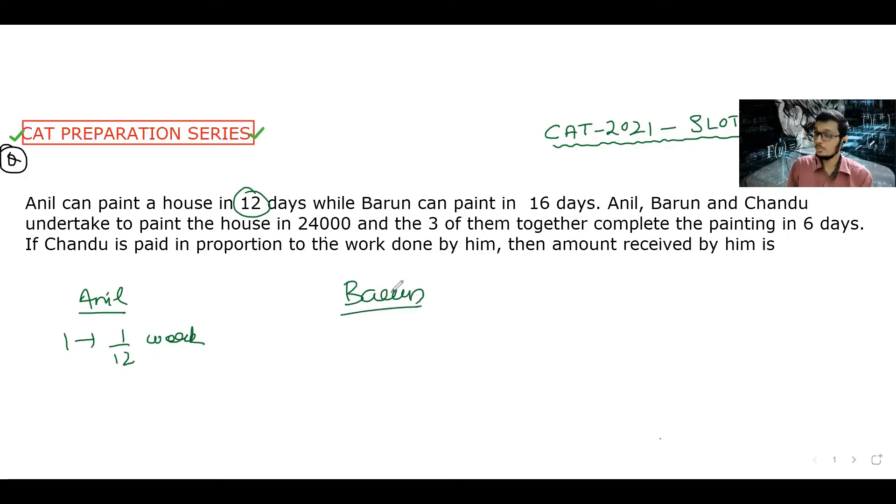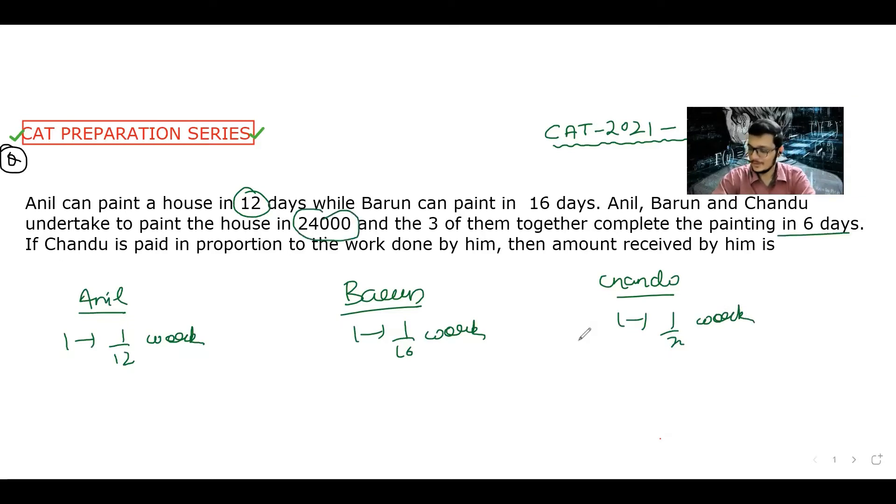Barun can paint a house in 16 days, so he will do 1/16th of the work per day. Chandu is also given some time. If Chandu can finish a house in some days, then in one day he will do 1 by that many days.